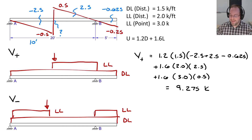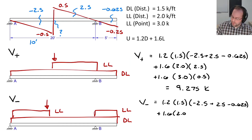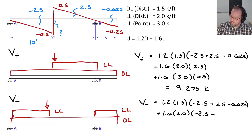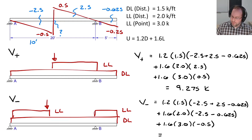Now we'll repeat this for negative shear V−. The dead load term is identical — same load, same total area, always applied. For live load: 1.6 × 2.0 kips/ft applied over the negative areas of −2.5 and −0.625. Then the point load: 1.6 × 3 kips × −0.5, the influence line value where that load is applied. Summing all together gives −13.525 kips.